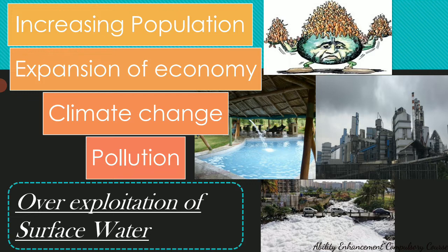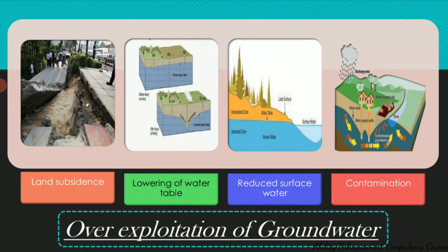Similarly, there is over-exploitation of groundwater. When we pump out groundwater excessively, the first problem is land subsidence. As seen in the image from Bangkok, which has been sinking 10 millimeters every year, excessive extraction of groundwater causes loss of support underground and the ground sinks. New Orleans in Louisiana has also seen very high levels of land subsidence. The second problem is lowering of the water table — wells are unable to reach groundwater level and we have to keep digging deeper.